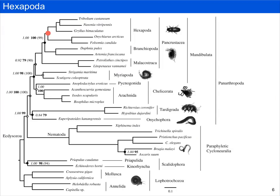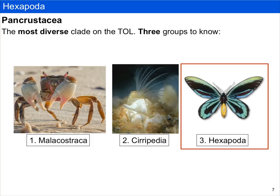If we look more closely at the phylogeny of panarthropoda, we can see that the hexapods — defined by this red node here — are part of the pancrustacea. We spent some time talking about pancrustacea in a previous video, where we briefly discussed malacostraca (crabs, shrimps, and lobsters) and introduced hexapods. Pancrustacea is the most diverse group on the tree of life, and there are three groups we talk about in BIS2C: the malacostraca, the cirripedia or barnacles, and the hexapods. This video is focused exclusively on the hexapods.